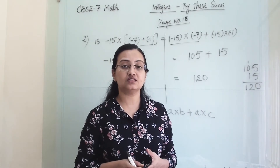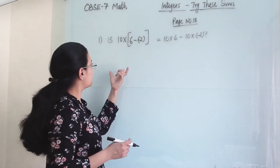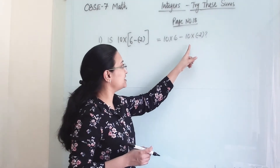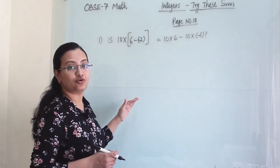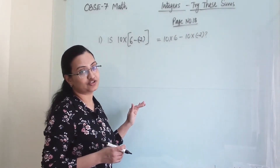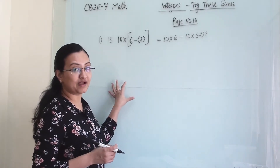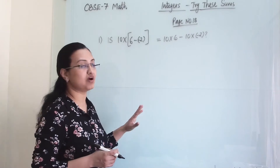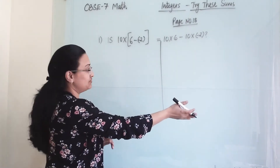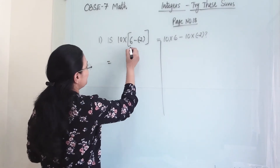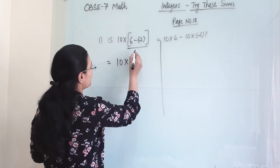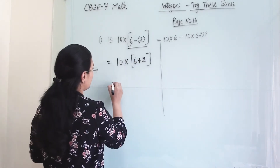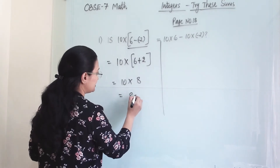Now moving towards another set of try this sums from the same page number. In this, 10 into bracket 6 minus minus 2 is equal to 10 into 6 minus 10 into minus 2. This is also based on distributive properties of multiplication of integers. This is the combined form and this is the expanded form of the same numbers. We check the left hand side first. Minus minus becomes plus, so we get 6 plus 2, giving us 10 into 8, and we get 80.